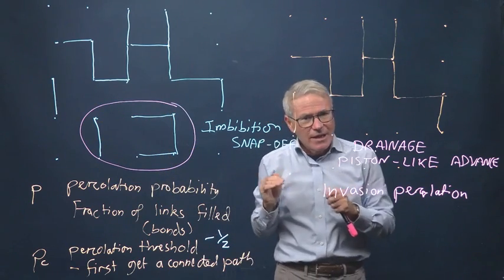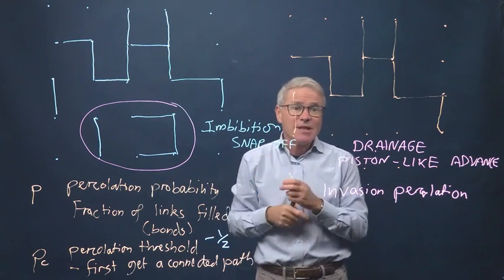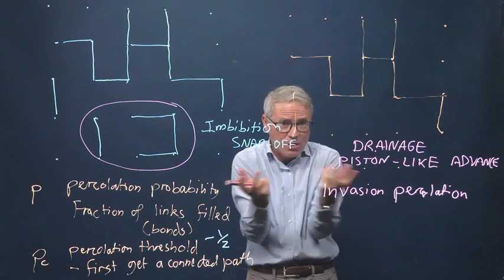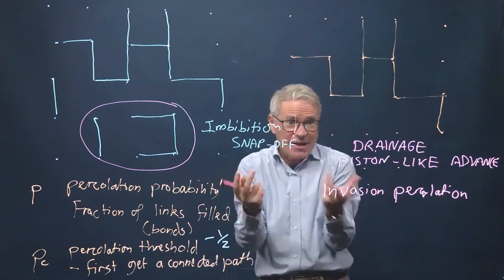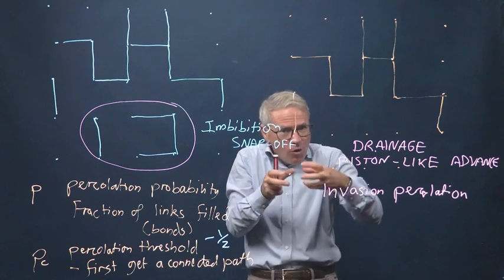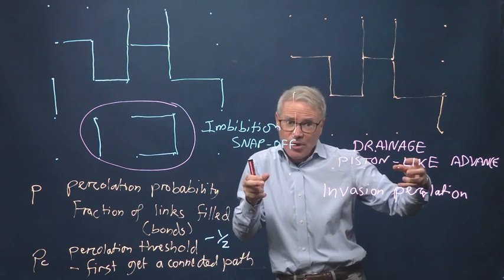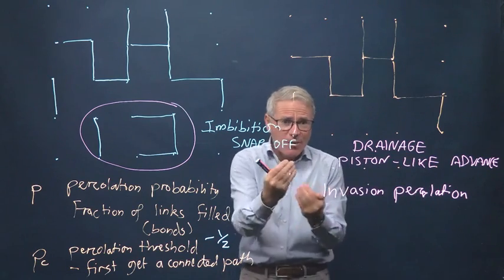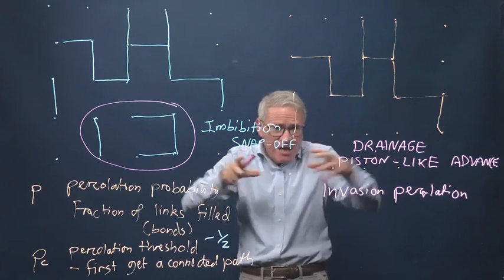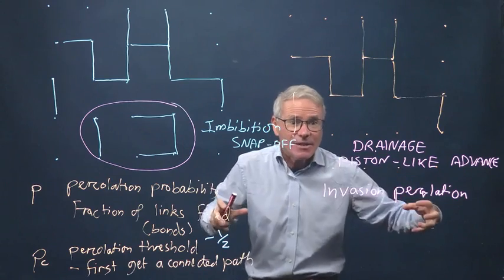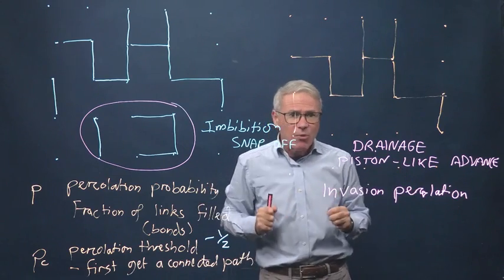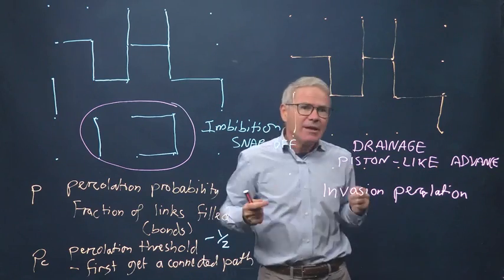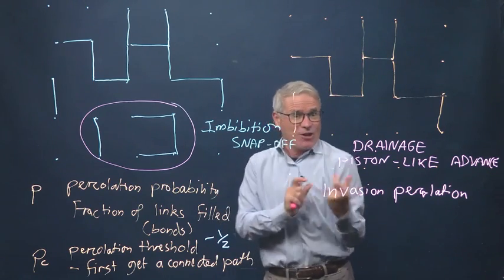So what you find in an imbibition process, or indeed a percolation process, is you have to fill quite a lot of the pore space with the fluid, in this case the wetting fluid, before it's connected through the centres of the pores and throats, and so before you can get significant flow. Essentially the flow is held back as it fills at random, but it already gets itself connected. It's like having a road network where you sort of open roads at random, but you can't drive across the city until the roads actually connect across.